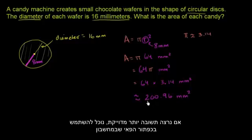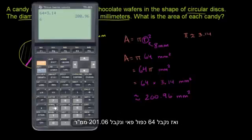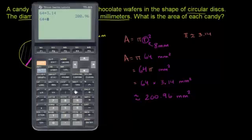Now, if we want to get a more accurate representation of this, π actually just keeps going on and on and on forever. We could use the calculator's internal representation of π. In which case, we'll say 64 times. And then we have to look for the π in the calculator.